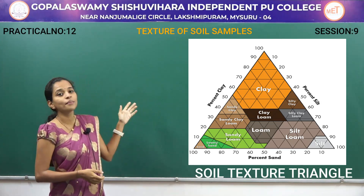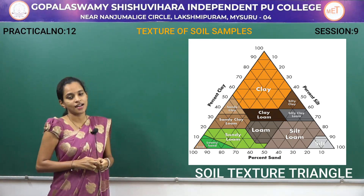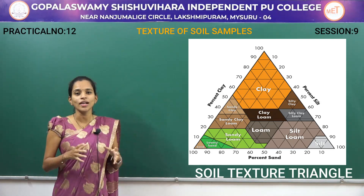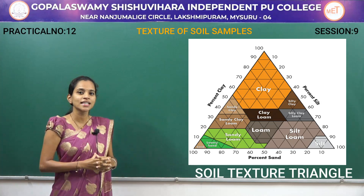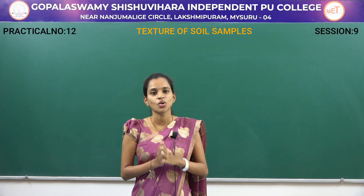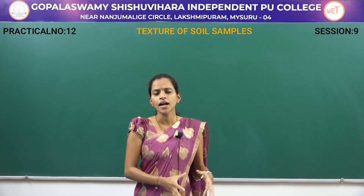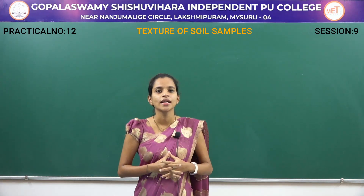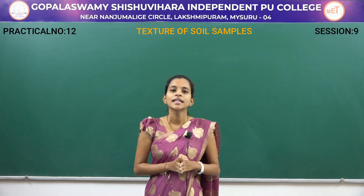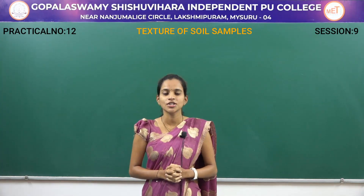Based on the sieve tube you separate the soil, and based on the soil texture triangle you can get the exact percentage of three different components: silt, clay, and sand. This experiment can be done for different types of soil — garden soil, roadside soil, agricultural land soil — to measure exactly what the composition of clay, silt, and sand components are in each.